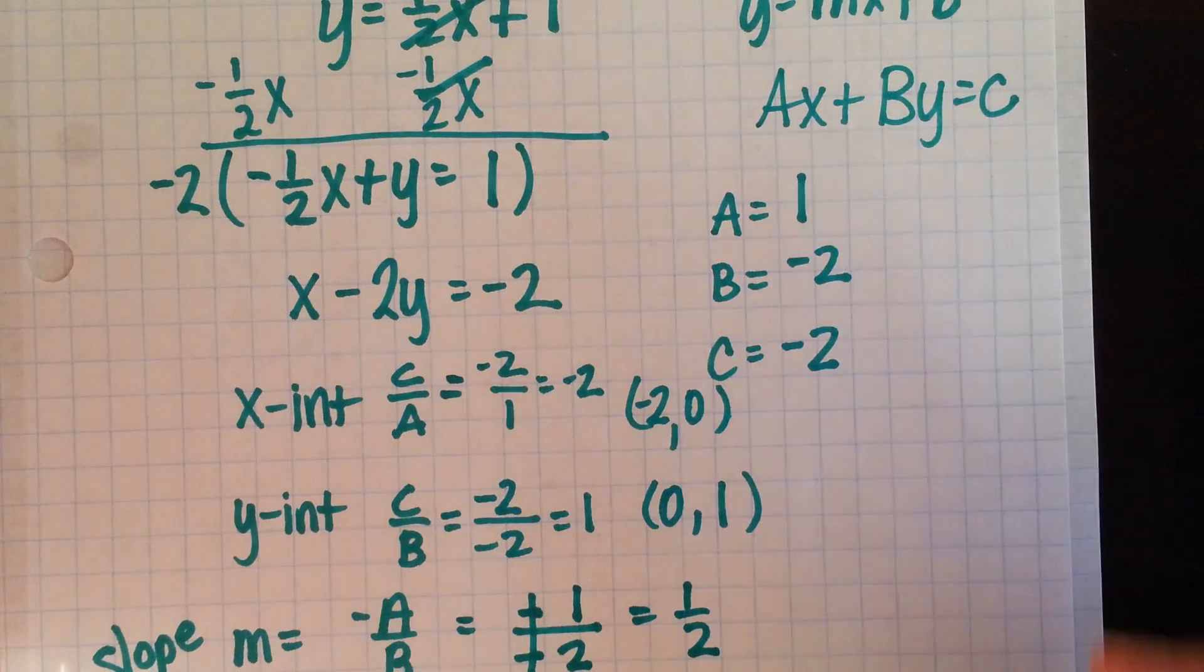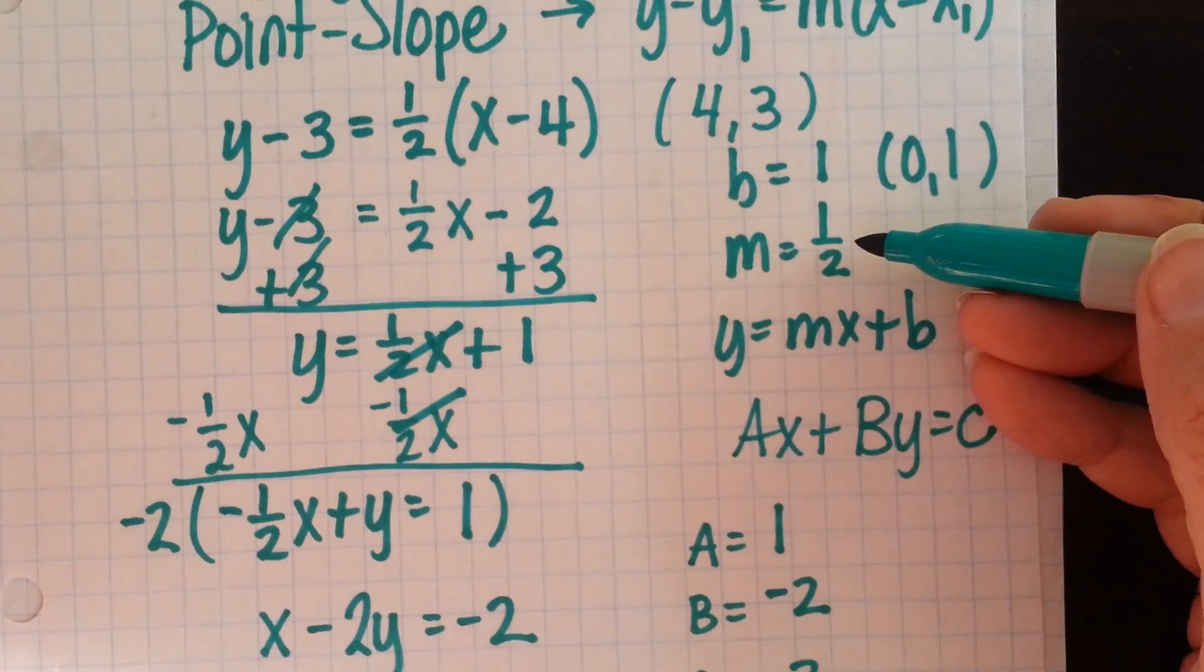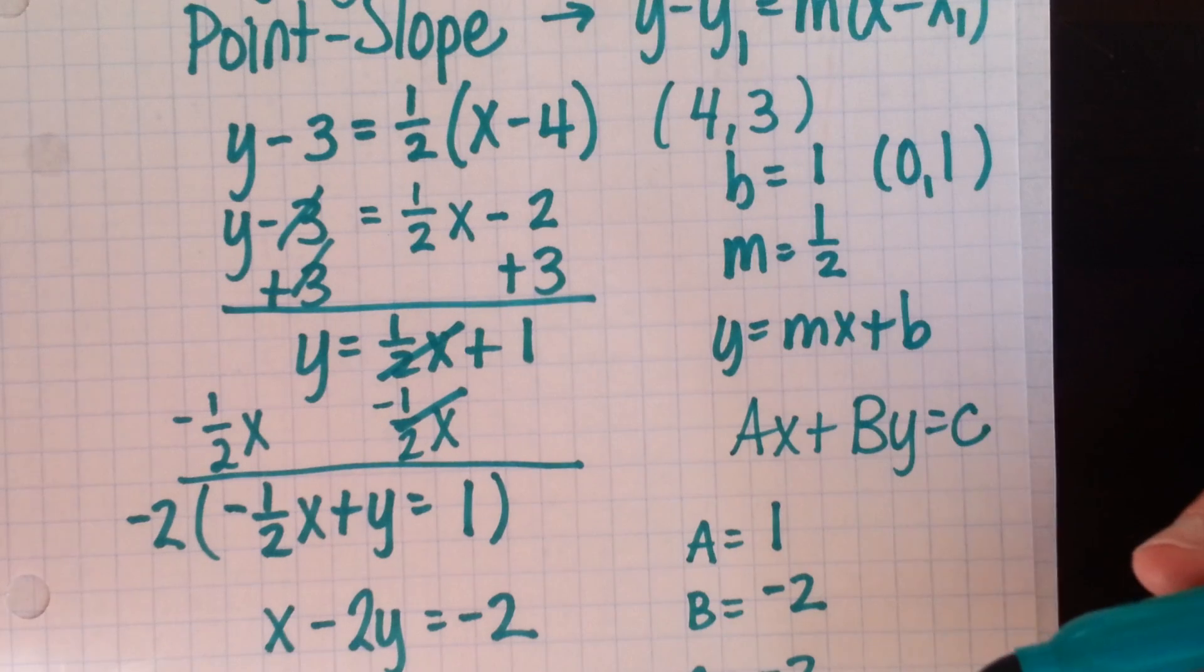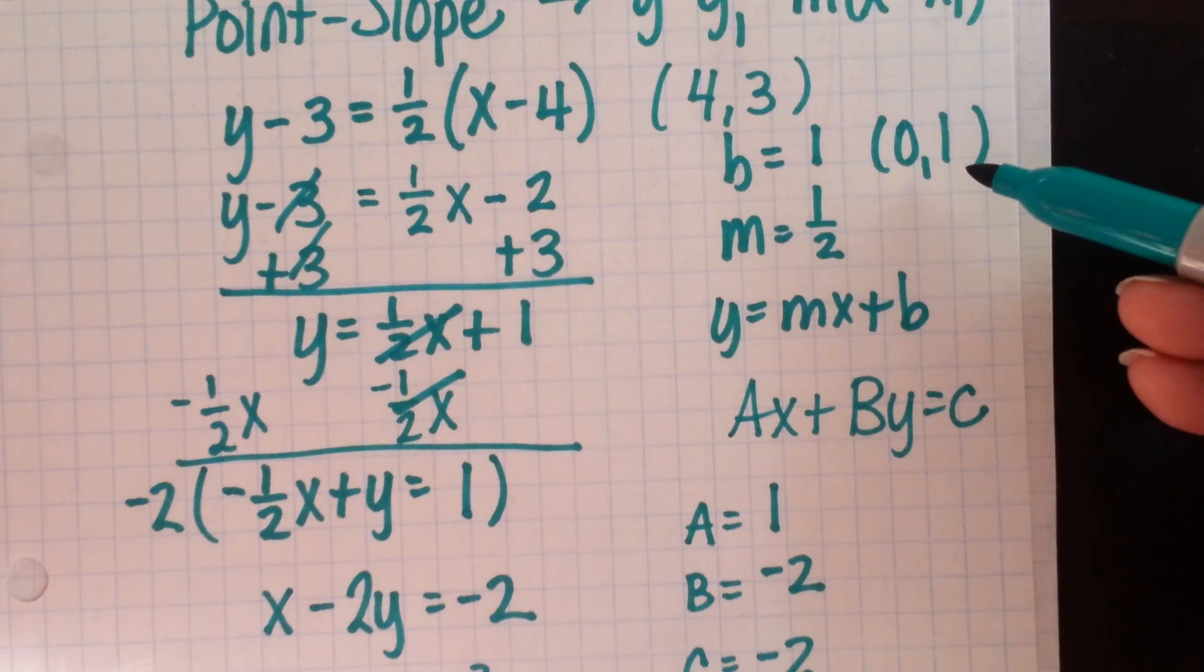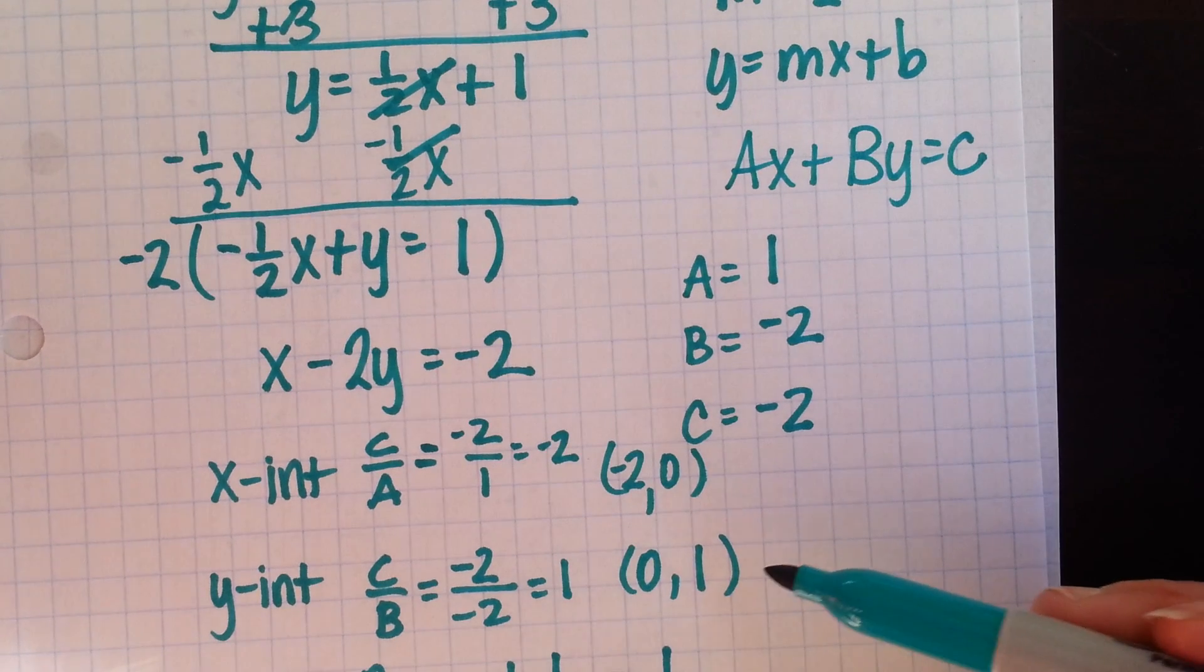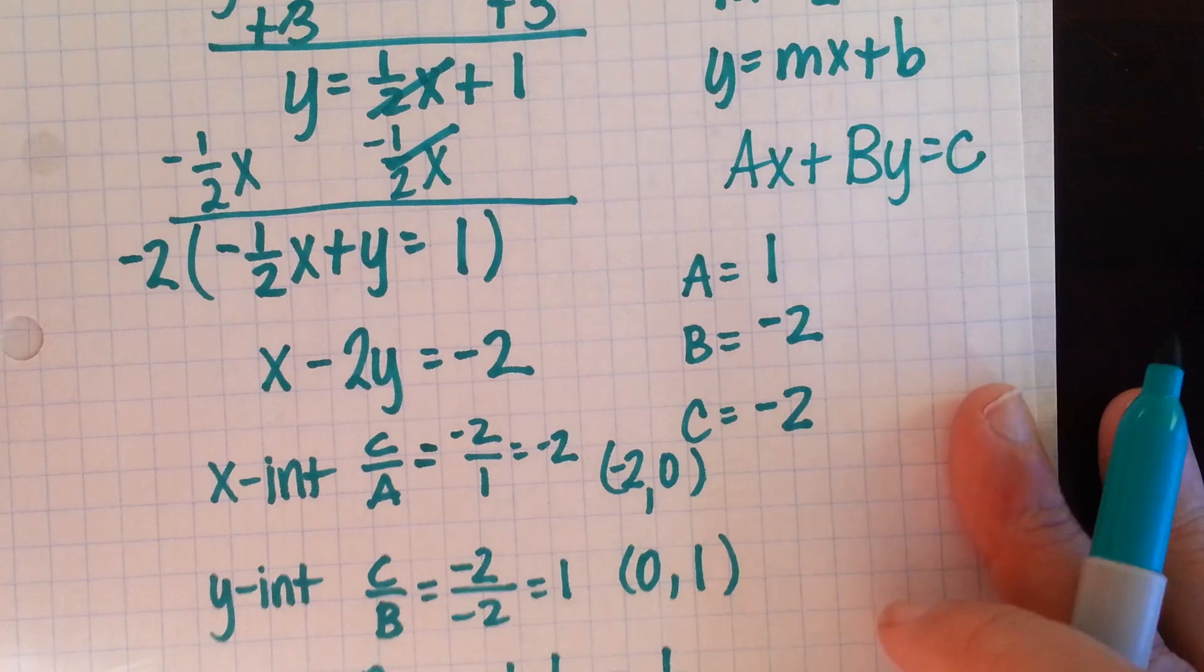And we can compare that information to what we got earlier. Our slope here is 1 half, our slope here was 1 half, and our original slope was 1 half. So we didn't mess anything up trying to rearrange. We also noticed we had a y-intercept of 1 up here. We also showed that we have a y-intercept of 1 down here. The new piece of information we gained was our x-intercept, negative 2, 0.